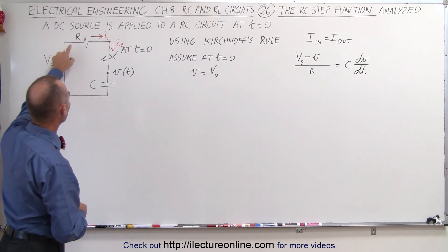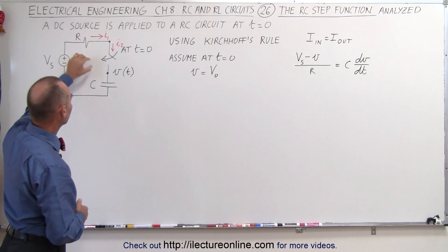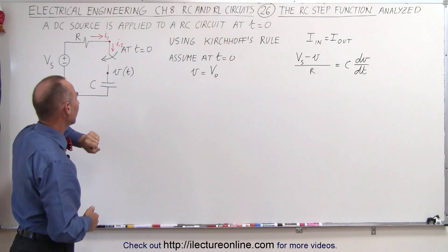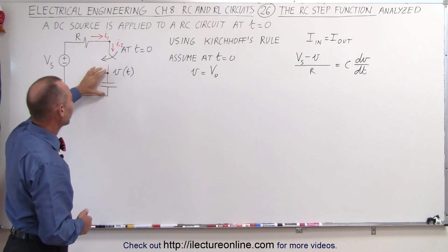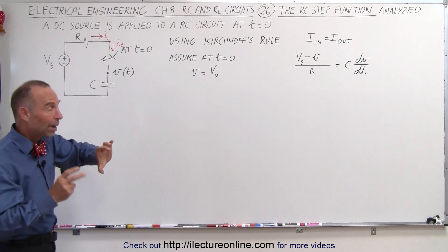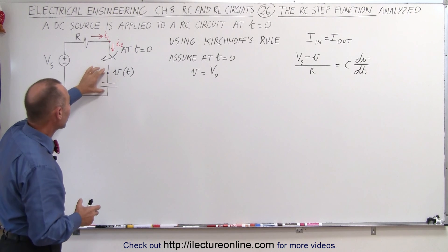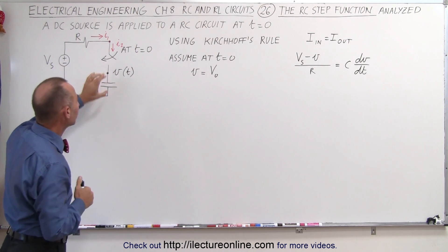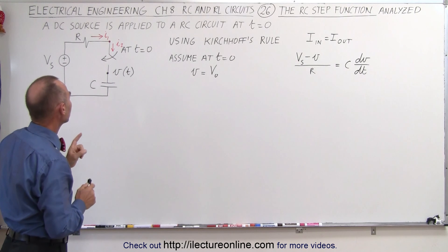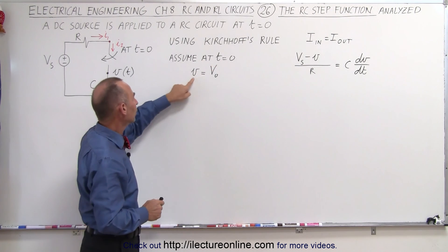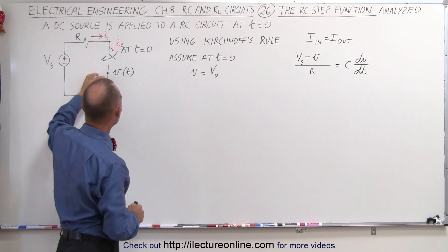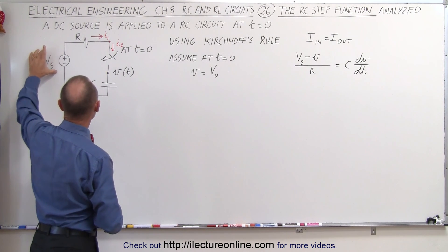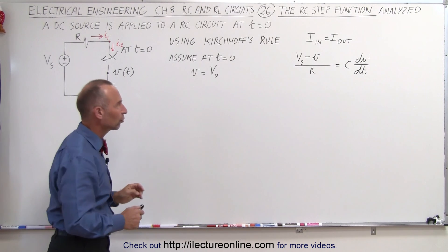So we have a DC voltage source, a resistor, a capacitor, and a switch that closes at time equals zero. We're trying to find an equation that describes the voltage across the capacitor as a function of time from time equals zero onward, and we're going to assume that at time equals zero, the voltage across the capacitor will be some initial voltage that is smaller than the voltage across the source.